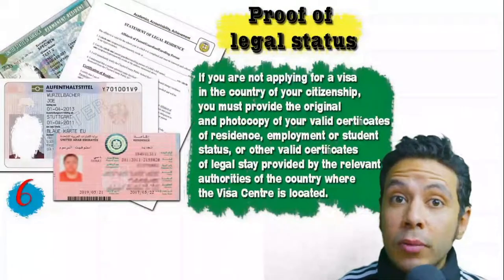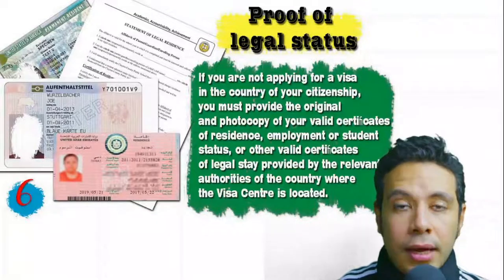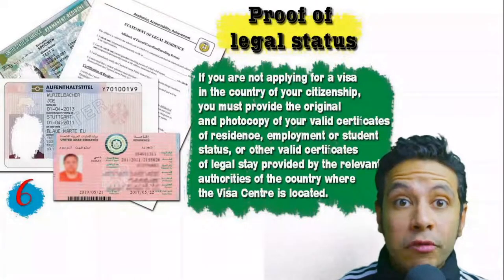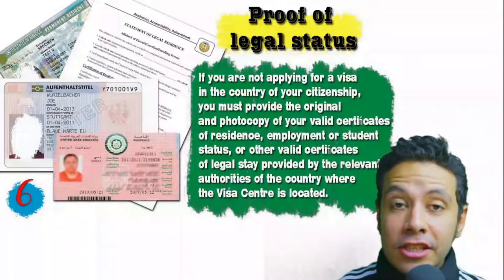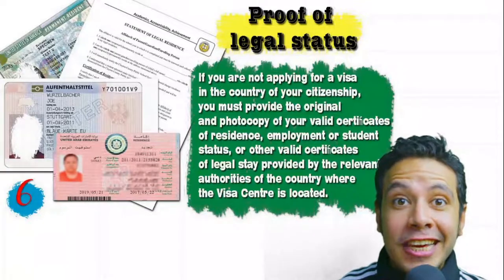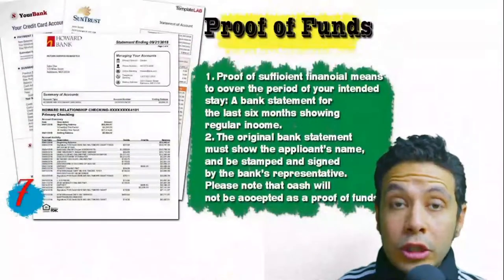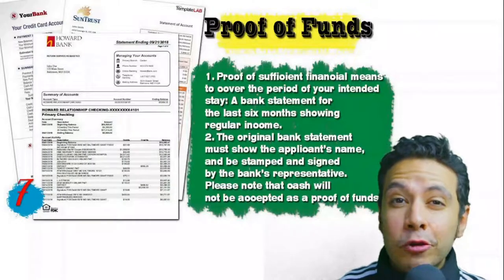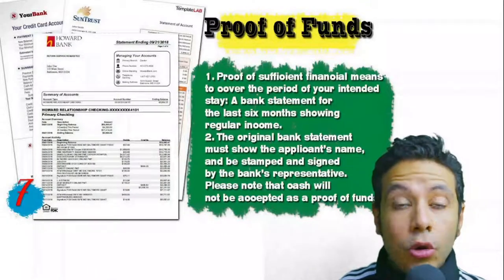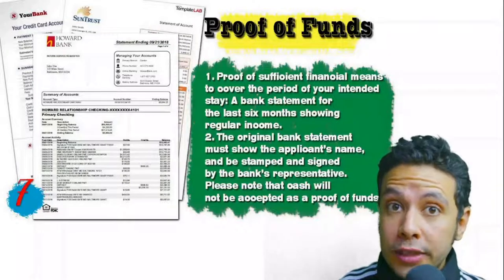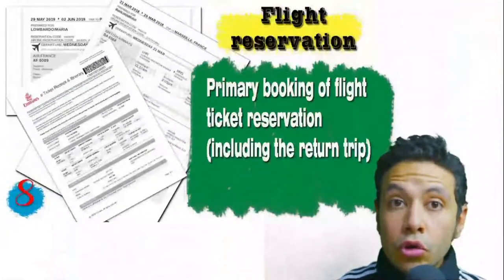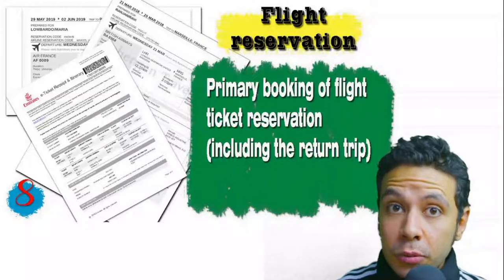If you are applying from a country different from your own, you will need to provide proof of legal status — a certificate of legal residence, and in some cases a valid residence visa for that country may also be accepted. You will also need to provide proof of sufficient funds: a bank statement showing your balance for at least six months. The original bank statement must show your name and be signed and stamped by bank representatives. Remember that cash will not be accepted as proof of funds.